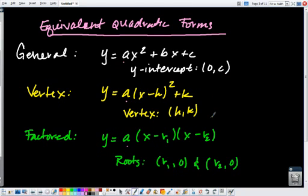Vertex form gives us the vertex. And as you guys found in the past few days, you can go from general form to vertex form to find the vertex. And that way you know either your minimum point or your maximum point of your vertex.